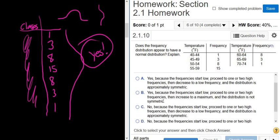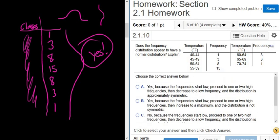So let's see. It's going to be either A or B. Let's read A. Yes, because the frequencies start low, proceed to one or two high frequencies, then decrease to a low frequency, and the distribution is approximately symmetric.